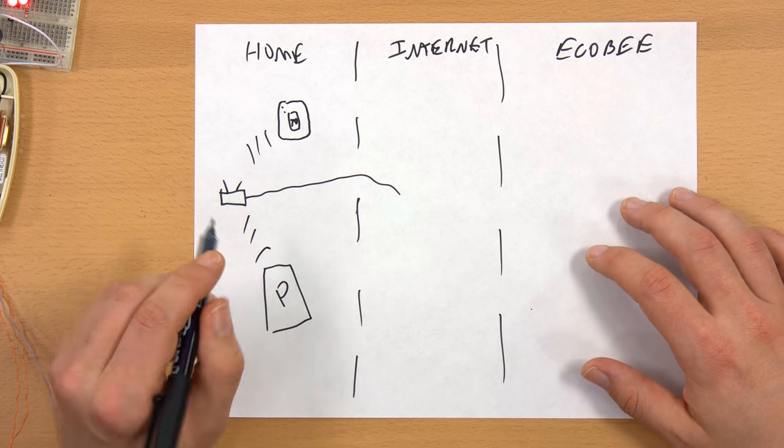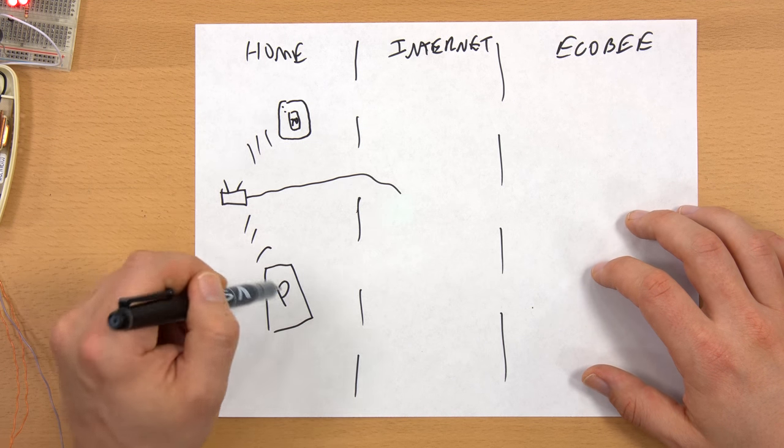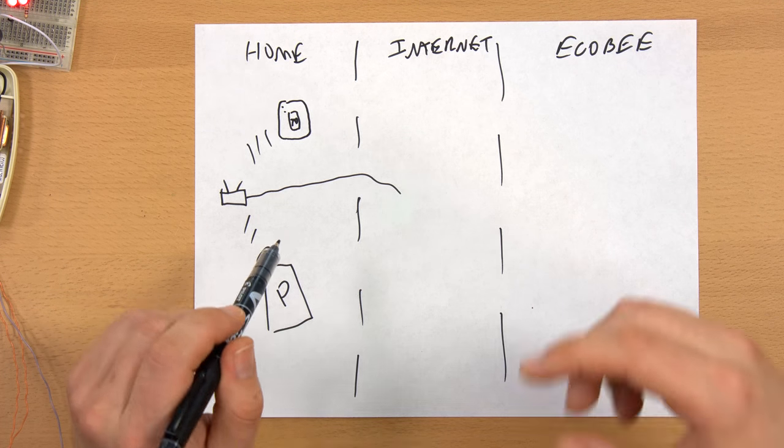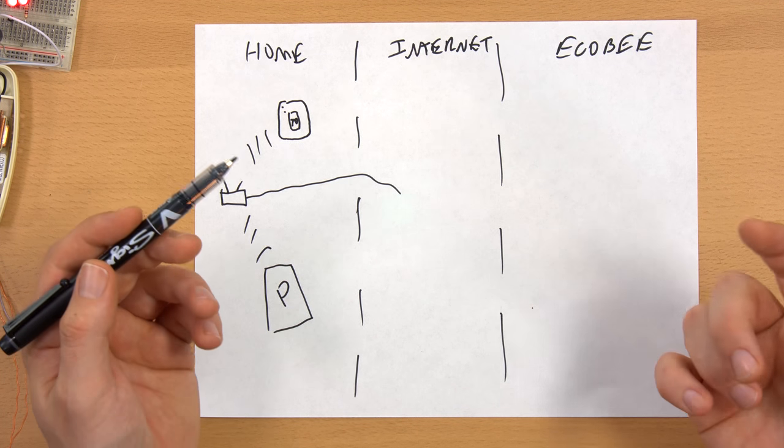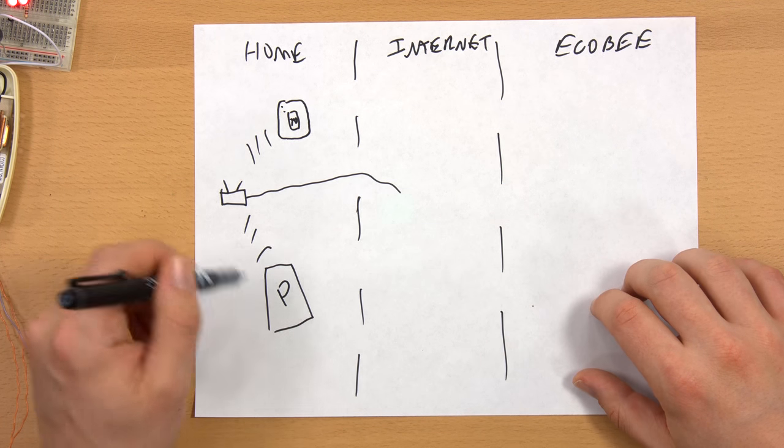So you want to control your Ecobee from your phone. Let's say you're sitting on the couch and my Ecobee is upstairs, so I don't want to get up from the couch, walk all the way upstairs just to change one degree and then come back down. So much better, much cooler, much easier to do it with my phone.